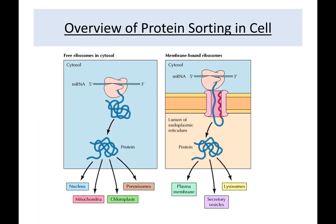In this lecture we are going to learn about how proteins are sorted to their final destination. In mammalian cells, proteins can be synthesized either on free ribosomes or on membrane-bound ribosomes. Proteins synthesized on free ribosomes either remain in the cytosol or they can be transported to the nucleus, mitochondria, chloroplast, or peroxisomes.